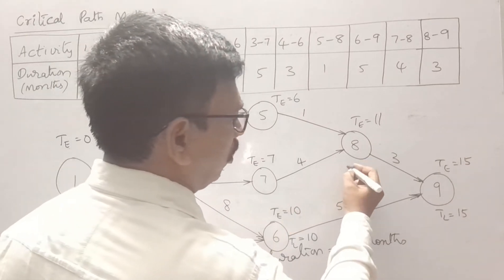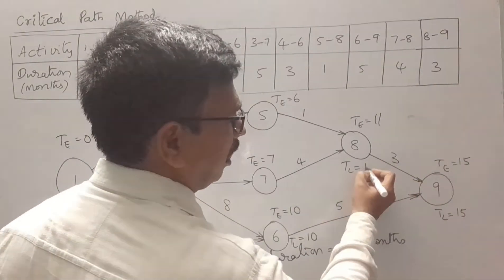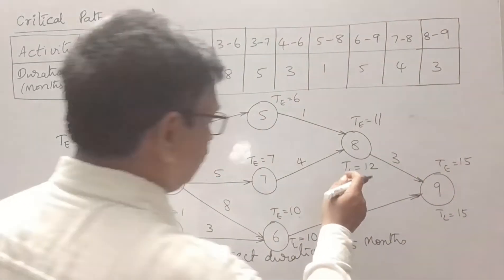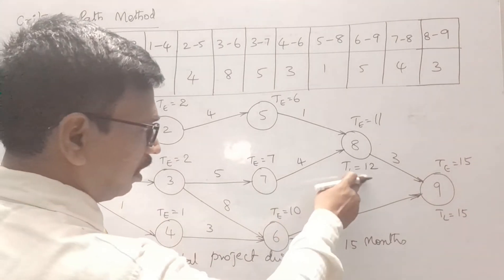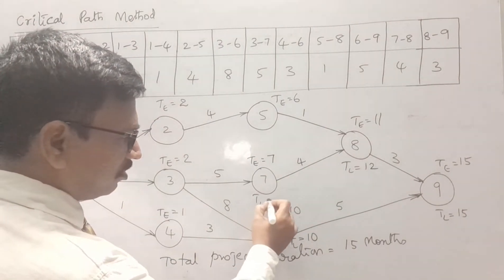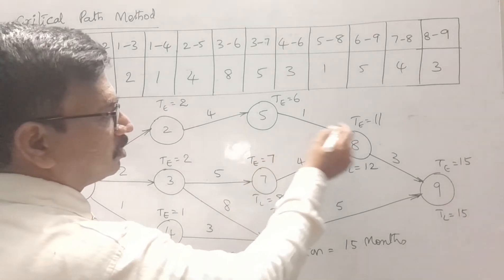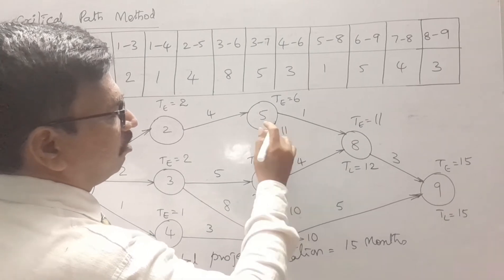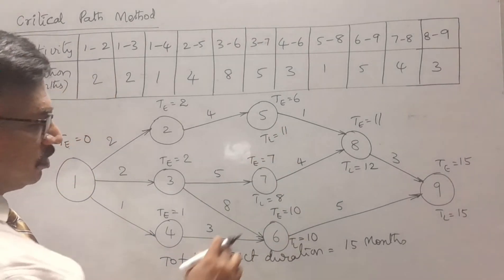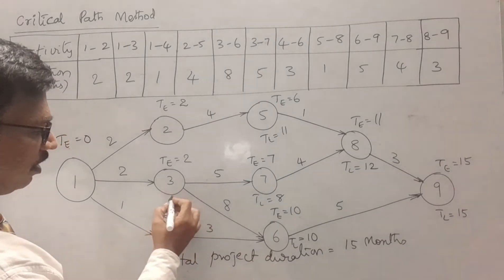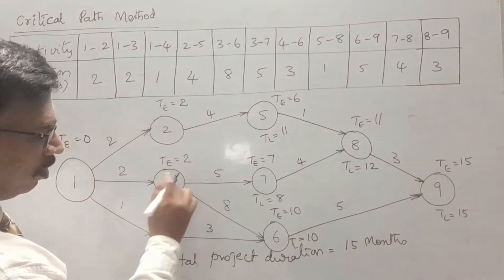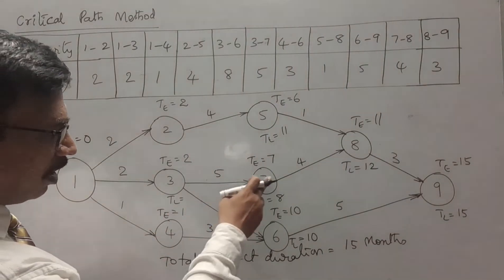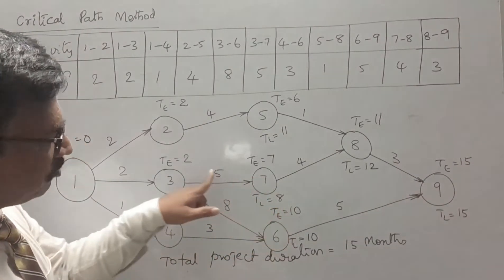For node 8, TL = 15 minus 3 = 12. Then for node 7, TL = 12 minus 4 = 8. For node 5, TL = 12 minus 1 = 11. For node 3, we consider two paths: from node 6 it is 10 minus 8 = 2, and from node 7 it is 8 minus 5 = 3.